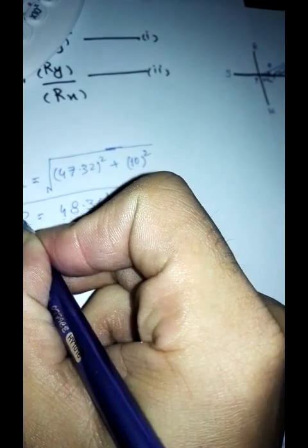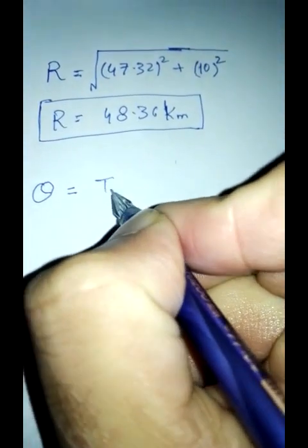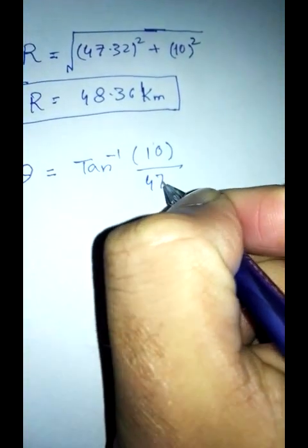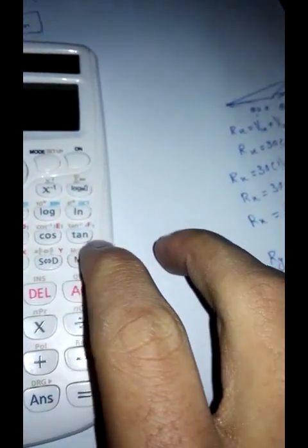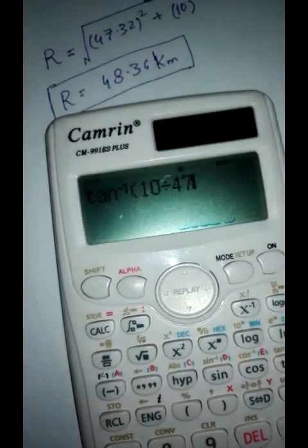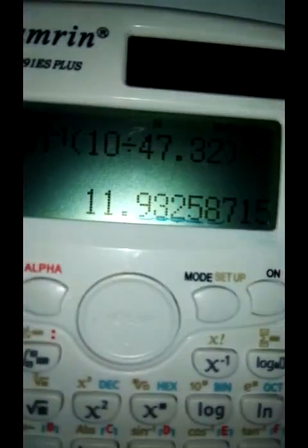Now to find the direction theta, which is equal to tan inverse of Ry, which is 10, divided by Rx, which is 47.32. So tan inverse of 10 divided by 47.32.